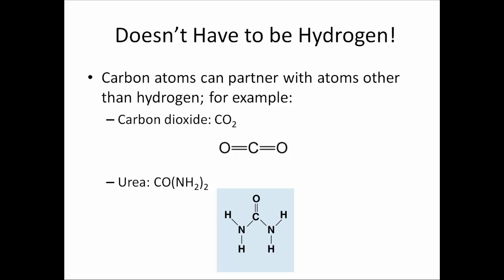Carbon doesn't have to bind with just hydrogen. Carbon can partner with other atoms. For example, it can partner with oxygen and you get carbon dioxide — dioxide means two oxygens, and carbon needs four partners, so it makes two double bonds. Carbon dioxide is a very stable molecule. Or it will partner with ammonia in a reaction carried on in the liver and form urea. Urea has carbon double bonding with oxygen and making single covalent bonds with nitrogens. The nitrogens, to satisfy their valencies, bond with hydrogens and carbon.